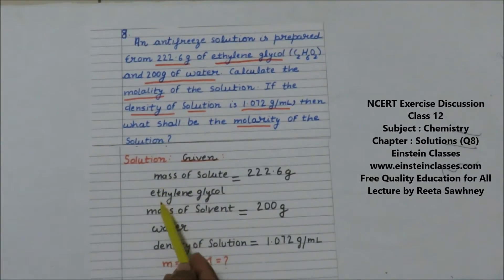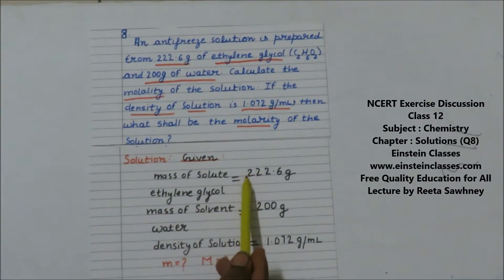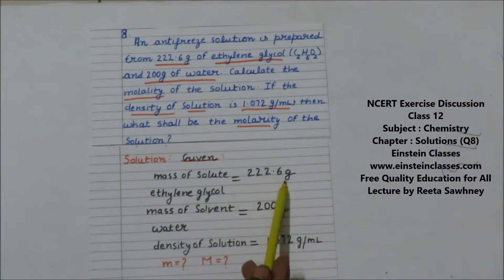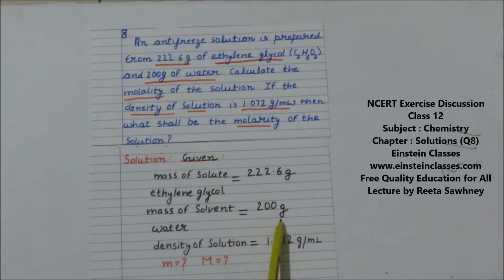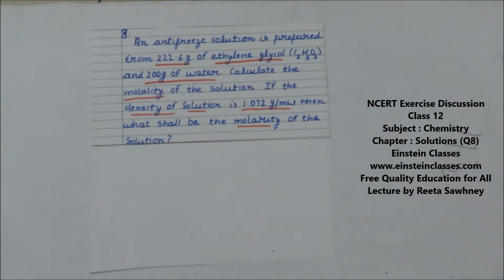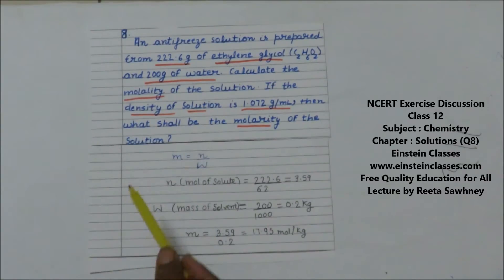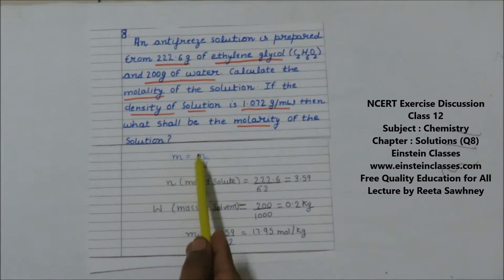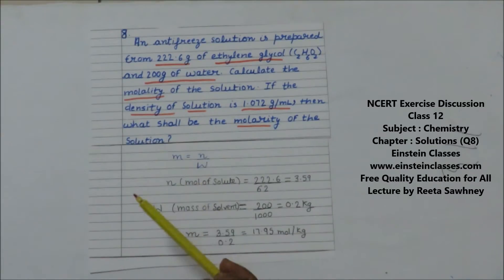Given: mass of solute, that is ethylene glycol, is 222.6 grams; mass of solvent, that is water, is 200 grams; and the density of solution is 1.072 gram per ml. Our aim is to find out the molality and molarity.